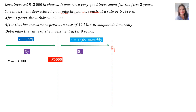The time slot for the second part will be 5 years. Now let's do the sum. They told us the investment depreciated on a reducing balance. Therefore, the formula that we will use is A equals P bracket 1 minus i to the power of n.